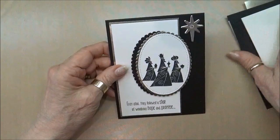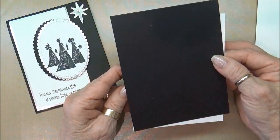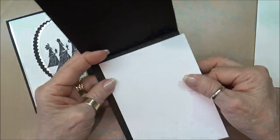The first thing that you're going to need is a piece of basic black cardstock that's four and a quarter by eleven and it's scored at five and a half to make a standard A2 size card. Then I have a piece of our shimmery white cardstock that's four by five and a quarter and that will be for the inside.